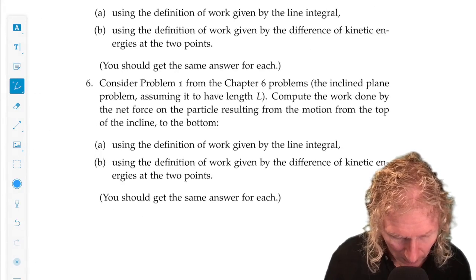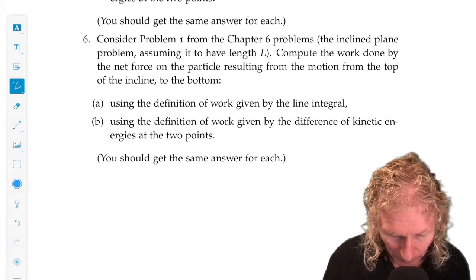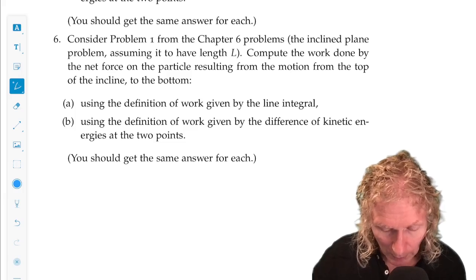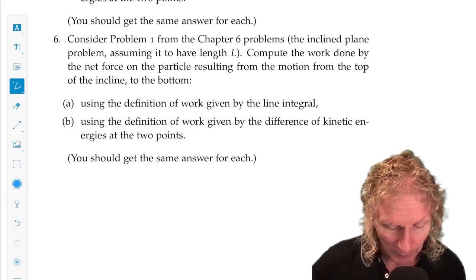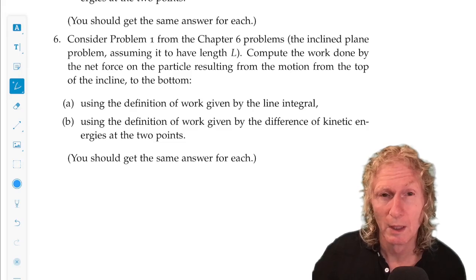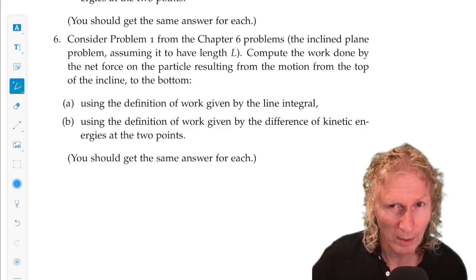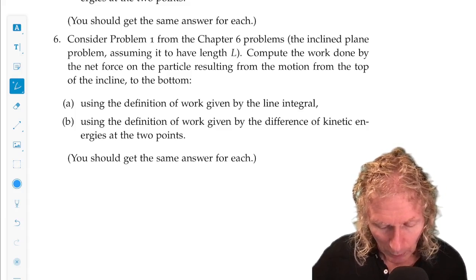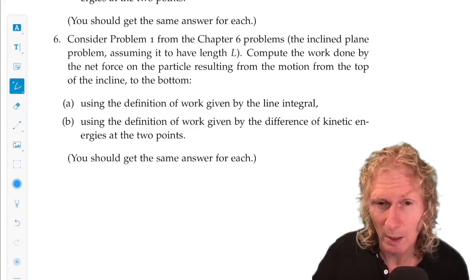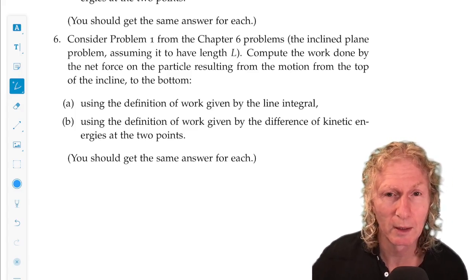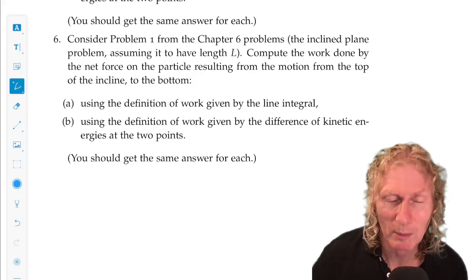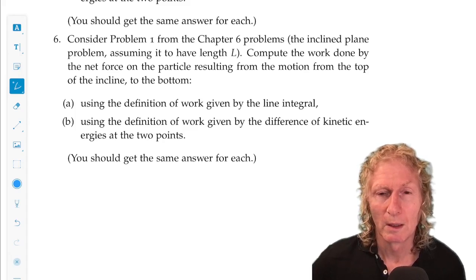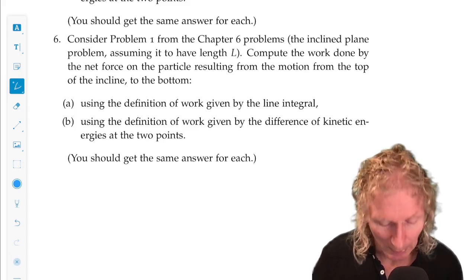And then problem six is an inclined plane problem that you've done earlier. And I want you to compute the work done by the net force. The only force acting on the particle is gravity in this particular example, resulting from the motion from the top of the incline to the bottom. Top of the incline, maximum kinetic energy, sorry, minimum kinetic energy is zero, maximum potential energy, bottom of the incline, zero potential energy, maximum kinetic energy.